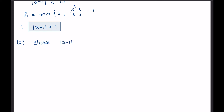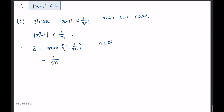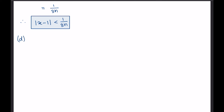Similarly for part (c), choose |x - 1| < 1/(3n). Then we have |x² - 1| < 1/n. Therefore, delta = min(1, 1/(3n)), where n belongs to the natural numbers, which equals 1/(3n). The required condition on |x - 1| is |x - 1| < 1/(3n).